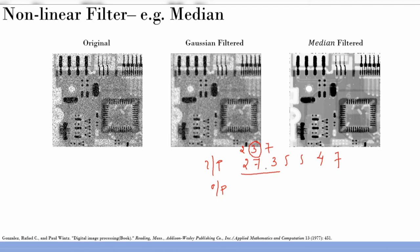For the first group {2, 7, 3}, sorted it's 2, 3, 7 — center value is 3, so output is 3. For {7, 3, 5}, sorted is 3, 5, 7 — output is 5. For {3, 5, 5}, output is 5. For {5, 5, 4}, sorted is 4, 5, 5 — output is 5. For {5, 4, 7}, sorted is 4, 5, 7 — output is 5. Boundary values use zero-padding.